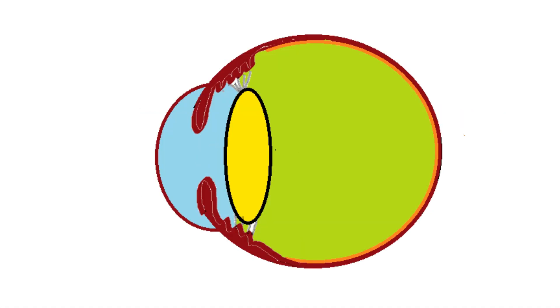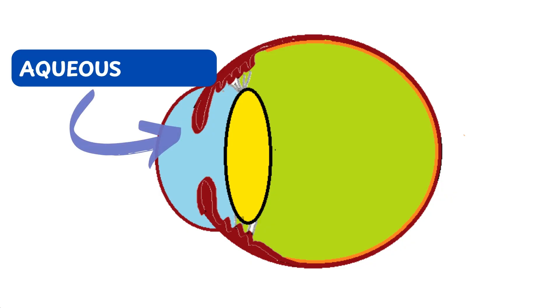The eye is a fluid-filled structure. Anterior to the lens, we have a water-like fluid known as the aqueous humor. The aqueous humor is present in two compartments.